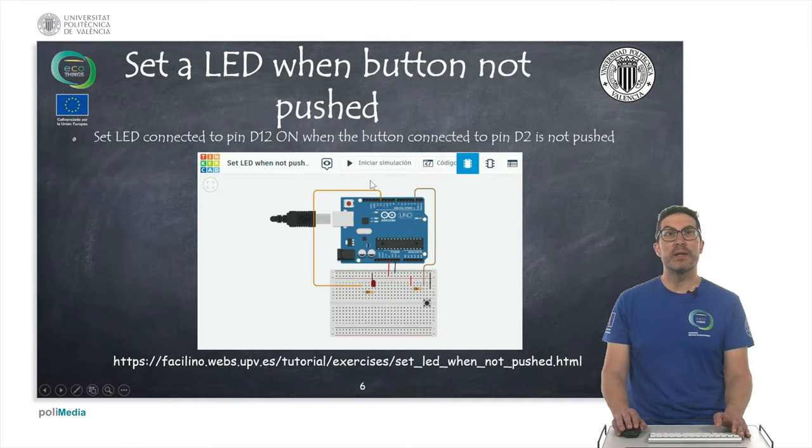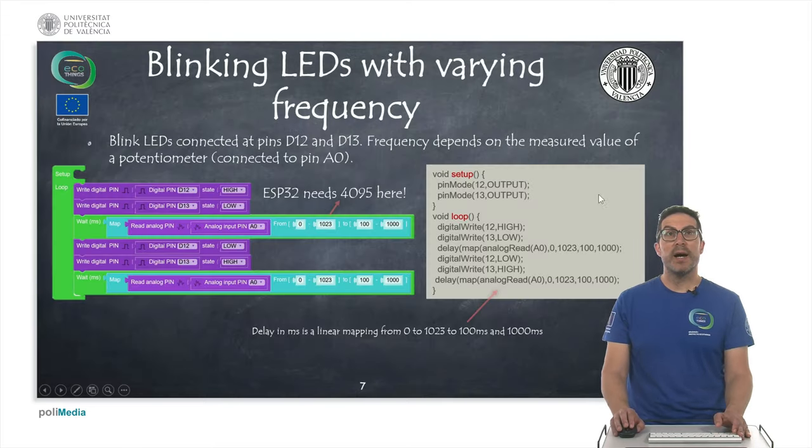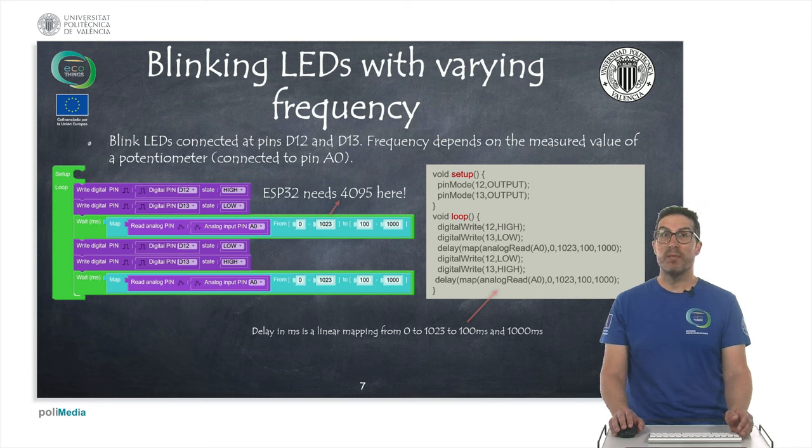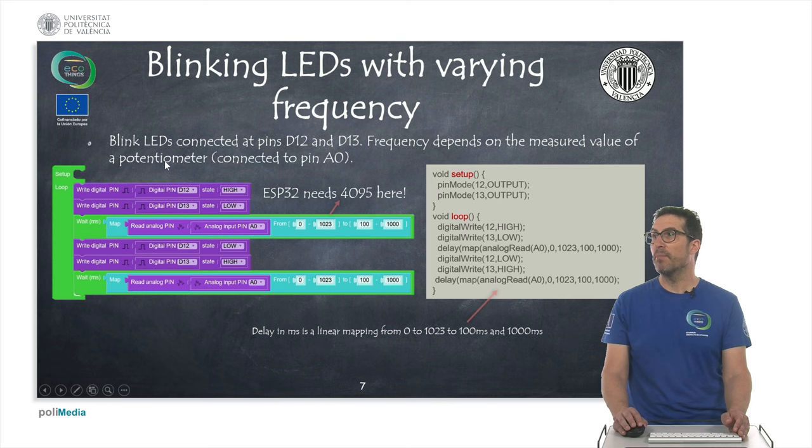Let me return back to these slides. And here in this last example, the idea is blinking two LEDs in this case, but with varying frequency. It's a more complex exercise, but you will understand immediately the purpose. We want to set one of the LEDs which is connected to pin D12 and the other LED which is connected to pin D13.